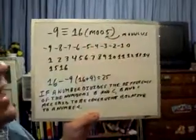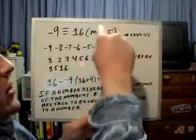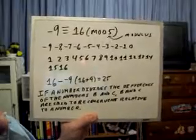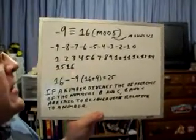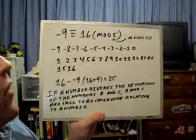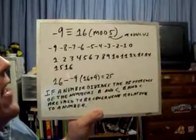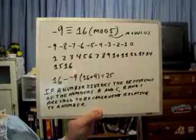So modulus 3 wouldn't work. But modulus 5 does. And we know this to be a fact because 16 minus negative 9, of course, is 25. And 3 does not divide 25. 3 divides 24 but 3 doesn't divide 25.